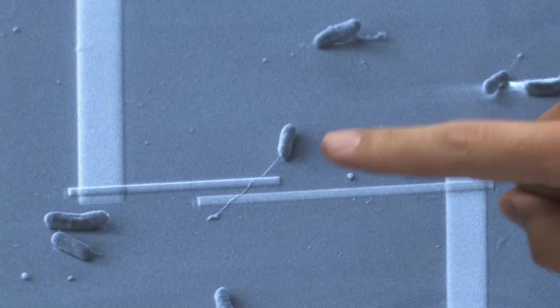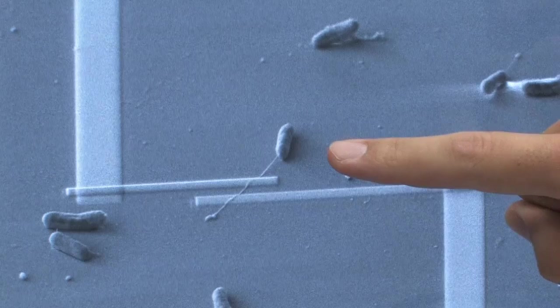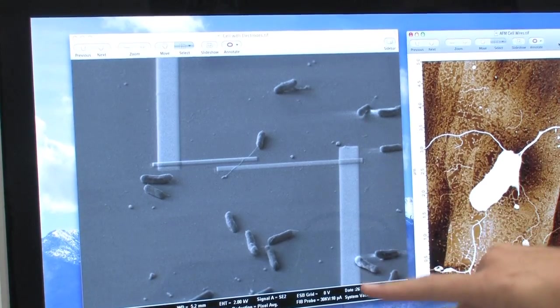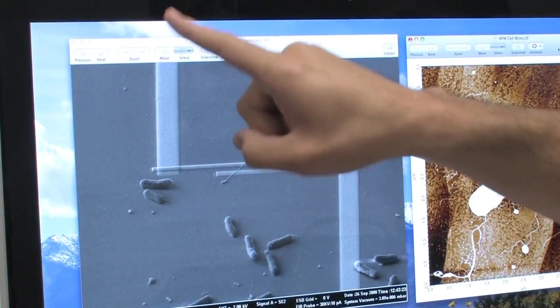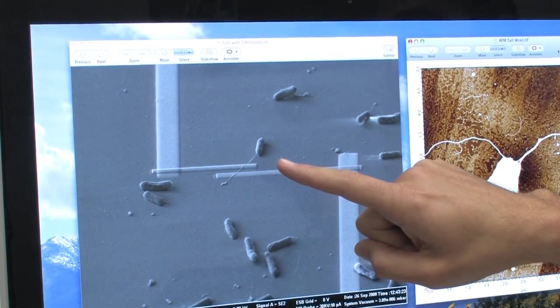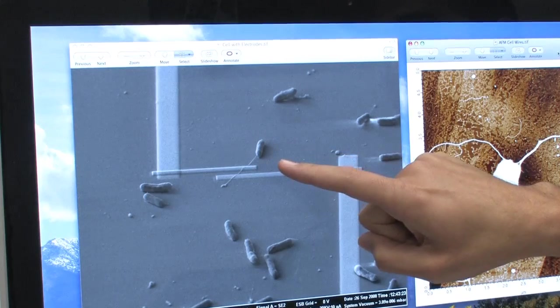So what we're looking at is a single Shewanella onidensis MR-1 cell, and we're looking at a bacterial nanowire that is secreted by that cell. What we did was we directly wrote platinum electrodes, so these are these metal bars that you're looking at here, directly writing electrodes along a single filament that's secreted by a single cell, and then measured the electron transport directly that way, which is finally conclusive proof that these bacterial nanowires do in fact act as conductive appendages.